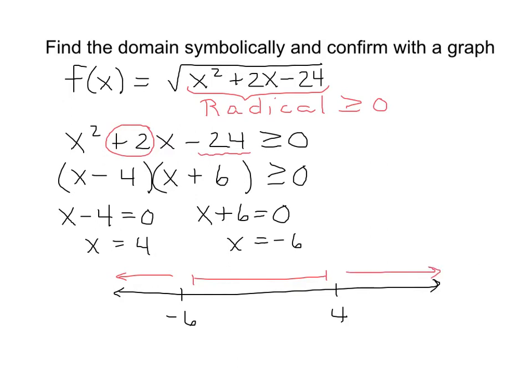Now we want to know which of these intervals will give us a product that's greater than or equal to zero. That is our x² + 2x - 24. Now we can pick test numbers in each of these.